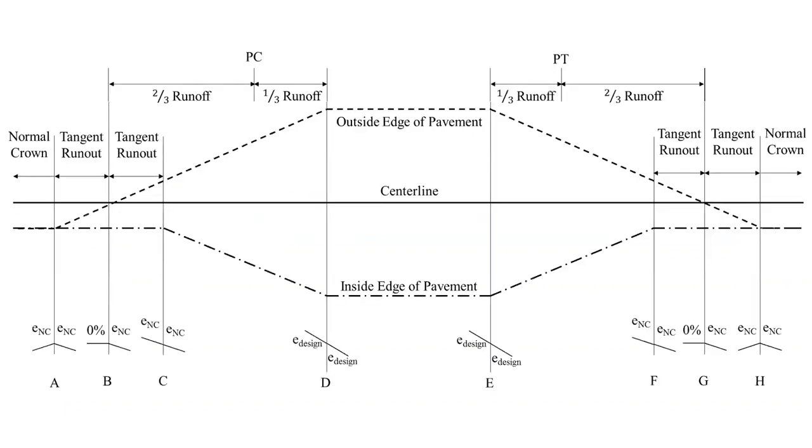I want to start with a nice drawing that's showing us the cross section perspective. We see the cross section down at the bottom of the screen in this A through H. Then we have the profile view above this that's going to allow us to see PC and PT and we do have a simple curve, so we're going to have this nomenclature with PC and PT. It's not a spiraled curve where we're going to have TS and ST and CS and SC points.